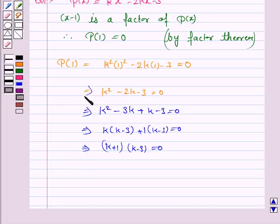So this implies (k+1)(k-3)=0, or k+1=0 or k-3=0, and this implies k=-1 or k=3.